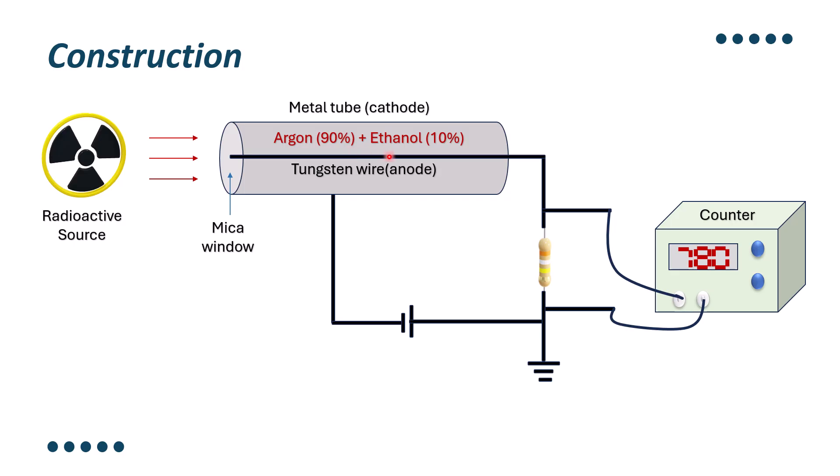Ebonite plugs provide insulation for a tiny tungsten wire which is stretched along the axis of the tube. This thin tungsten wire serves as anode.